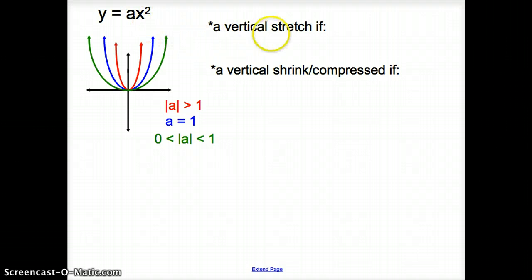We will have a vertical stretch if this a is greater than 1. So we could have negative 4 or positive 4. We could have negative 5 or positive 5. That's the absolute value of a is greater than 1. Notice on a vertical stretch how my parabola gets a lot skinnier, a lot more stretched vertically. Imagine it going up faster than my blue parabola, which is my parent graph.